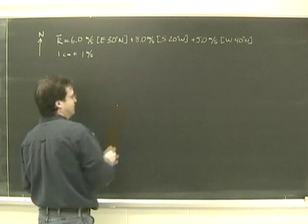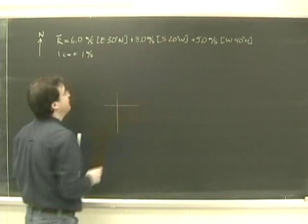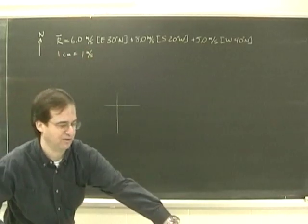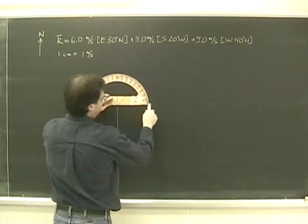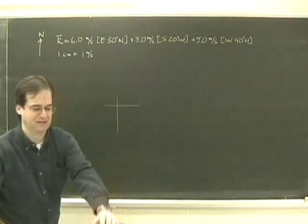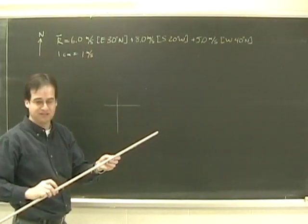We choose a point on our paper and draw a small bearing. Now what I want to do is draw six meters per second east 30 north. Go over here, east 30 north is right there, so I mark that off. Take your ruler, and six meters per second is going to be six centimeters.